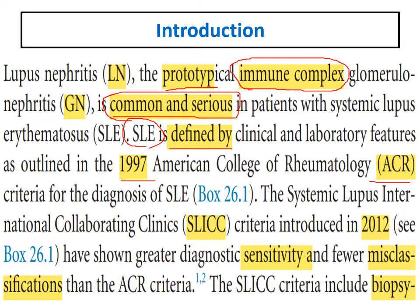The more recent criteria is the SLICC criteria — Systemic Lupus International Collaborating Clinics — published in 2012. The SLICC criteria have greater sensitivity and fewer misclassifications compared to the ACR criteria. So we have both ACR and SLICC criteria to know.